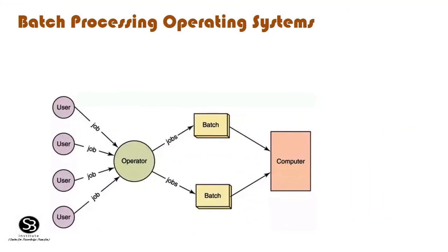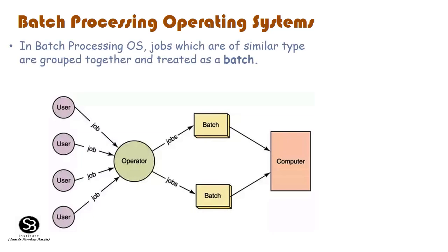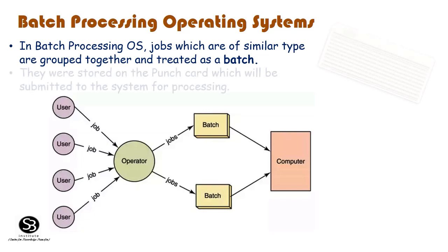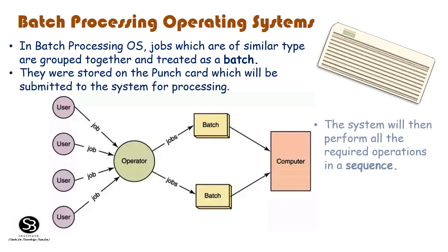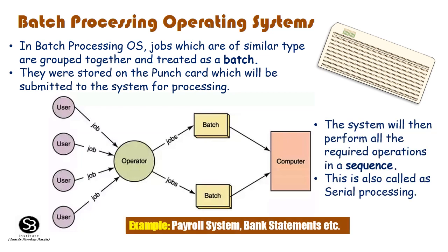Batch Processing Operating Systems: In batch processing OS, jobs of similar type are grouped together and treated as a batch. They are stored on a punch card which is submitted to the system for processing. The system performs all required operations in sequence. This is also called serial processing. Examples include payroll systems and bank statements.